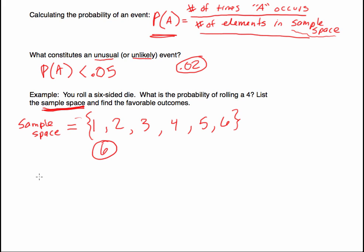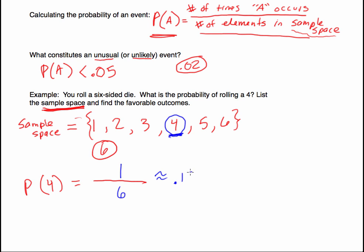If I want to know the probability of rolling a 4, I look at how many times a 4 occurs — what are the favorable outcomes? Looking at the sample space, there's only one: the 4. It occurs one time out of 6 possibilities. So 1 divided by 6 gives us approximately 0.17. The probability of rolling a 4 is approximately 0.17.